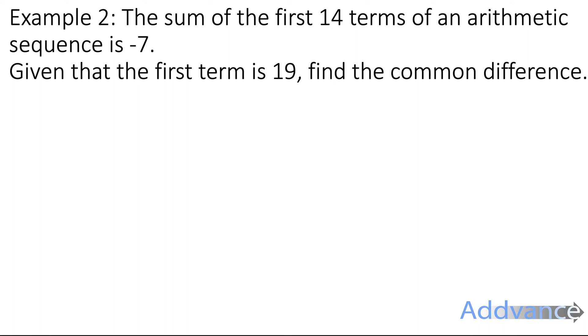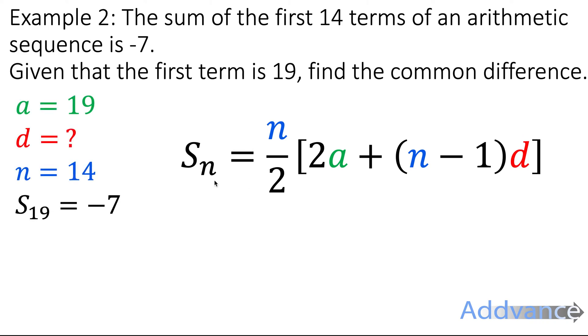Example 2: The sum of the first 14 terms of an arithmetic sequence is minus 7. Given that the first term is 19, find a common difference. So again we'll use this formula, because we are talking about the sum. It is a good idea to use this formula.